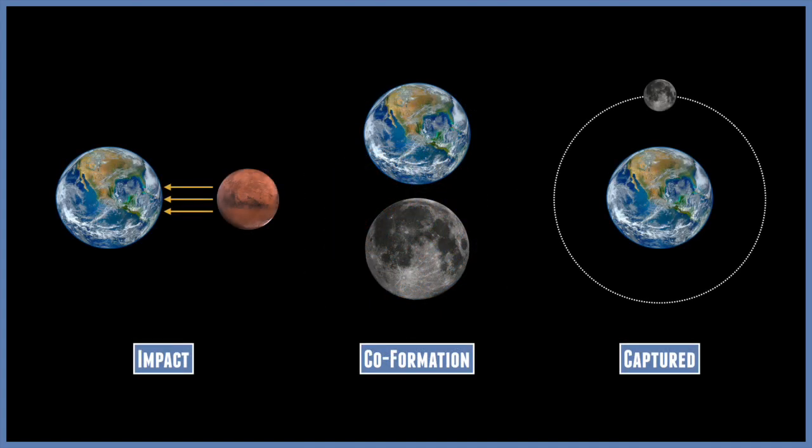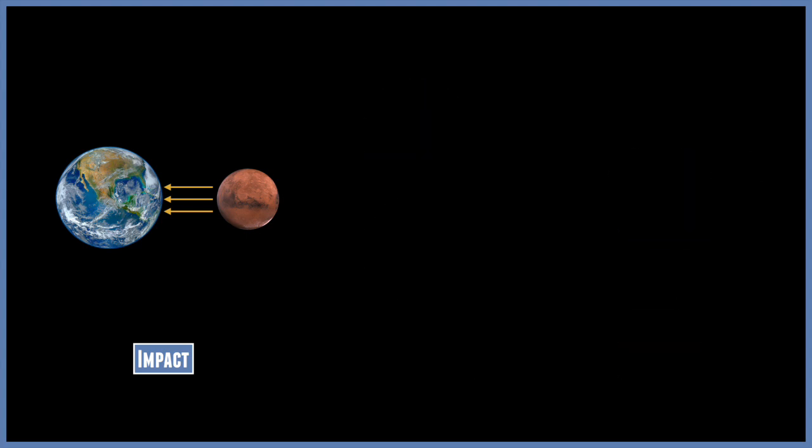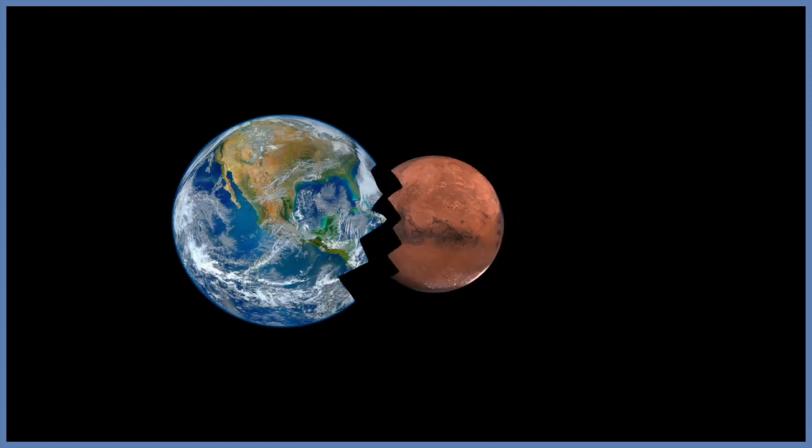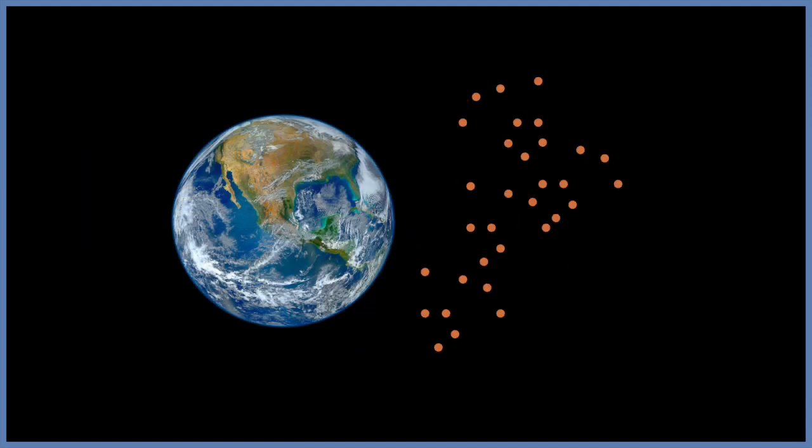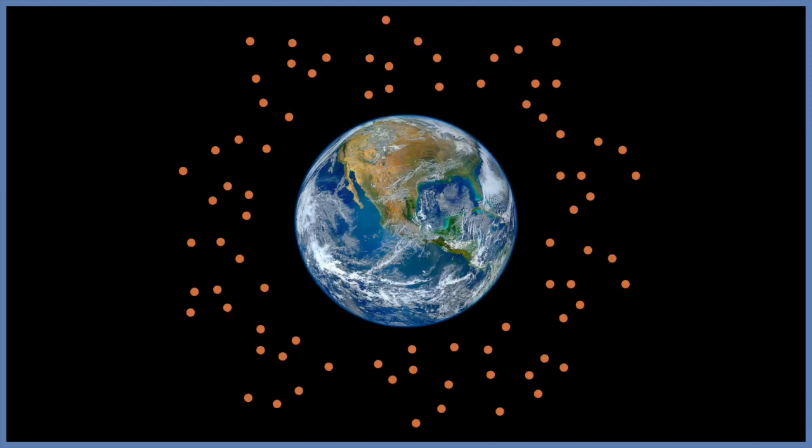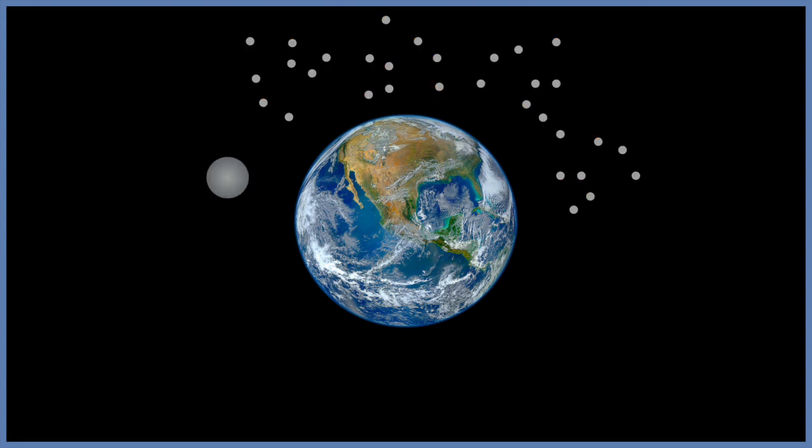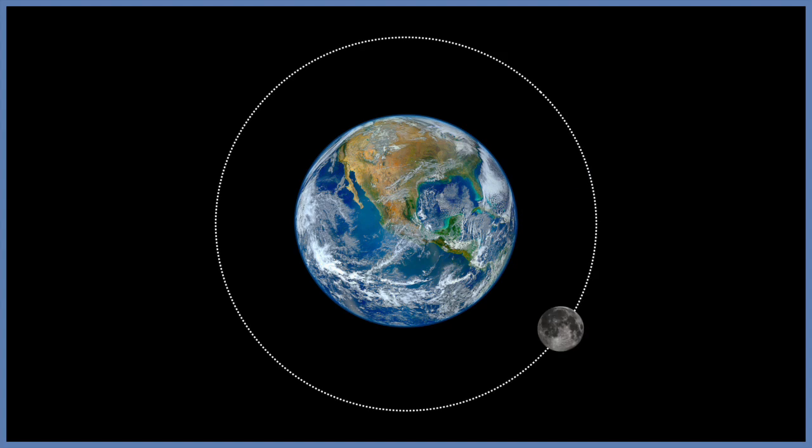The co-formation theory and the capture theory both explain some elements of the existence of the moon, but they have so many unanswered questions. So the leading theory is the giant impact theory. This seems to cover as much as possible and answers most of the questions. This makes it the leading theory in the formation of the moon, and is the best scientific evidence to show that our moon was probably once another planet that collided with Earth, and coalesced into what we know now as our closest neighbor, the moon.